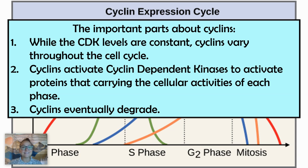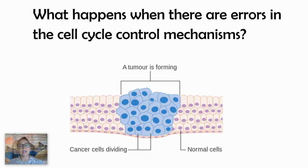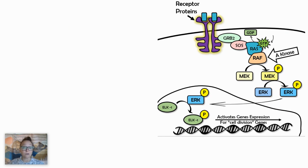That is the end of internal mechanisms. Now let's move on to what happens when there are errors in these cell cycle control mechanisms — what happens when there are mistakes and we're not regulating the cell? This is where we can have uncontrolled cell growth, which can lead to tumor formation. If those are malignant tumor cells, it could lead to cancer, though sometimes a tumor might be benign and not causing harm.